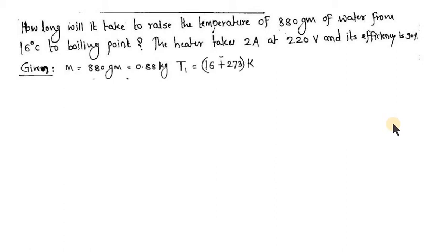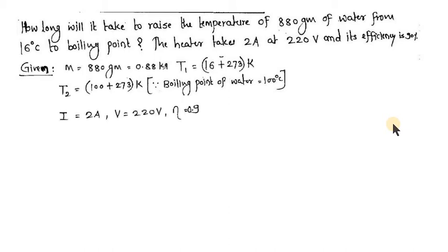The initial temperature of water, T1, is 16 degree Celsius (convert to Kelvin: 289 K). The final temperature, T2, is 100 degree Celsius (373 K). The current taken by the heater is 2 ampere, connected across a voltage of 220 volt, and efficiency eta equals 0.9.